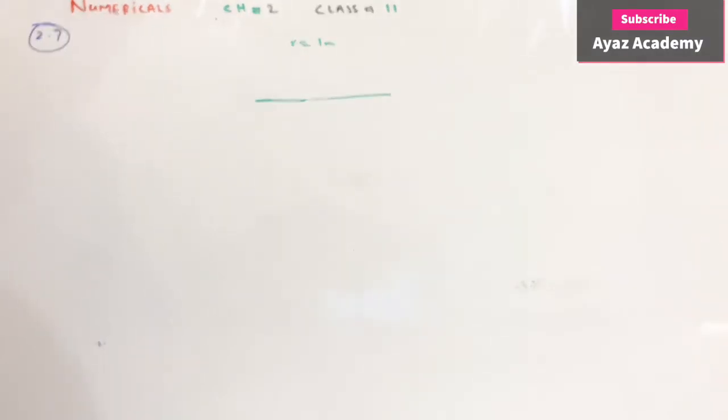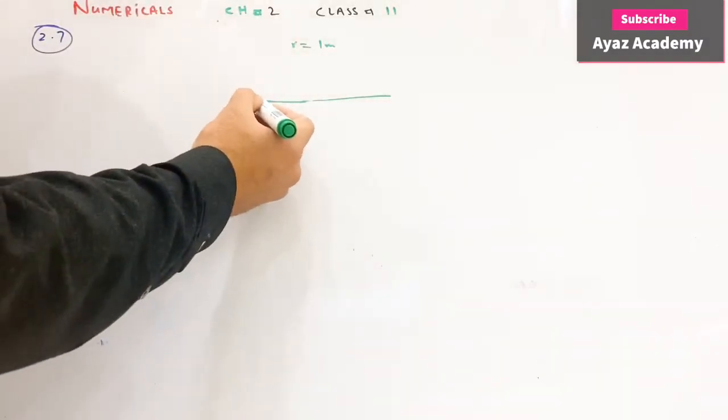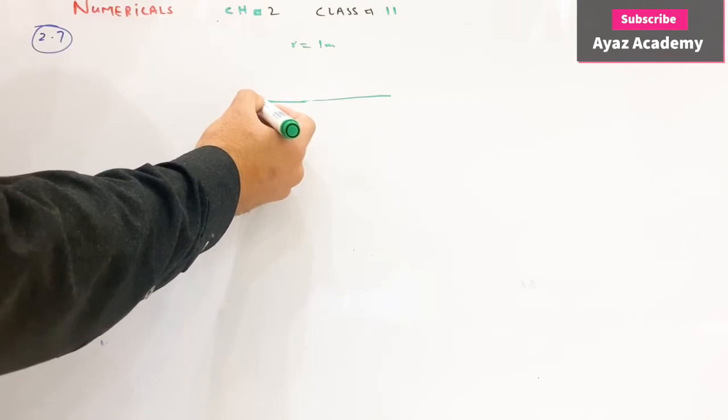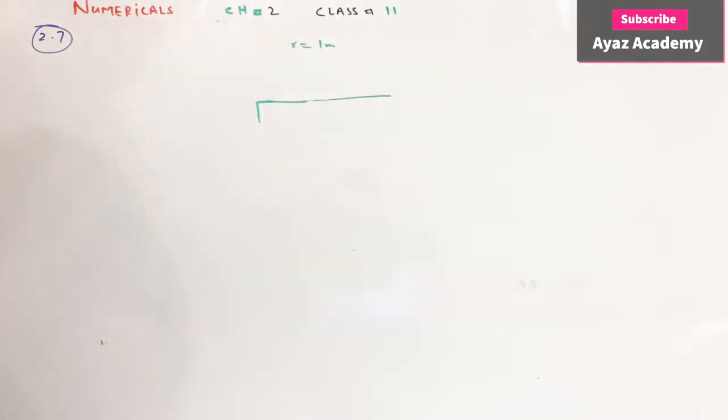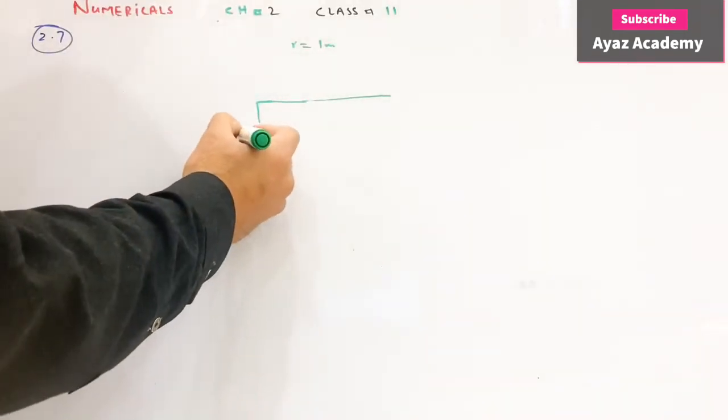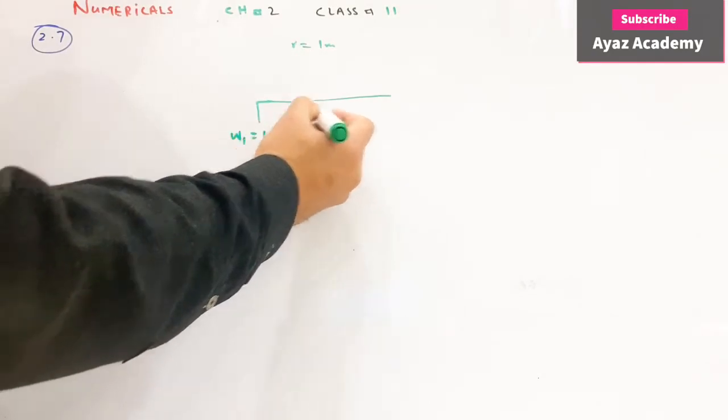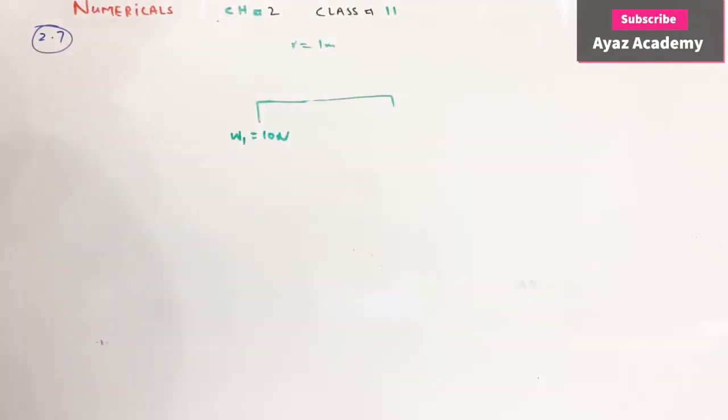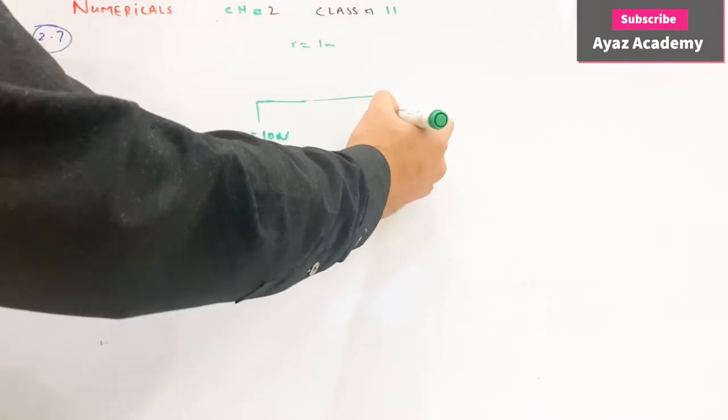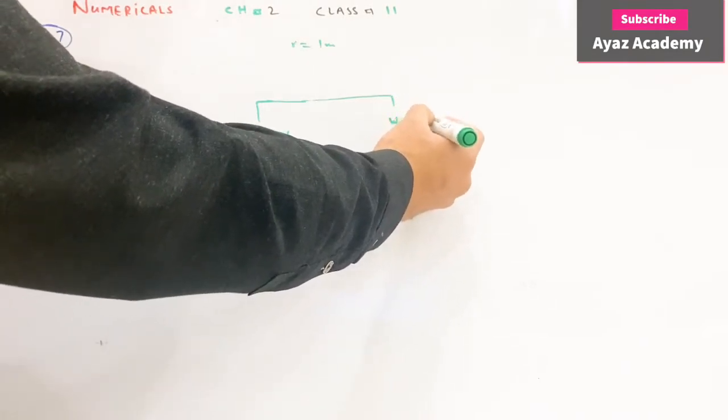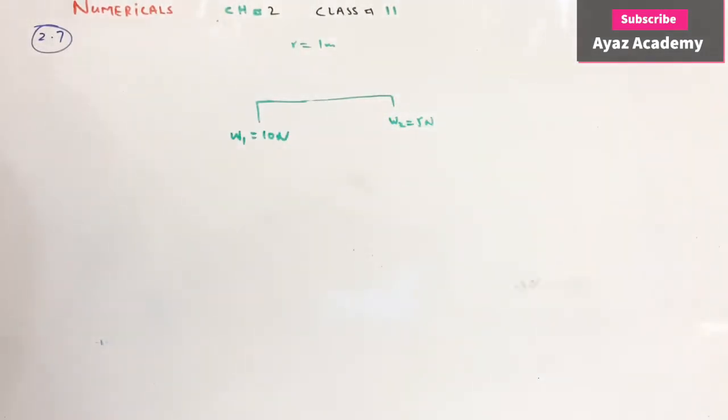At one side, on one edge, one weight is suspended by 10 newton. On the other side is a weight of 5 N. This is the center.